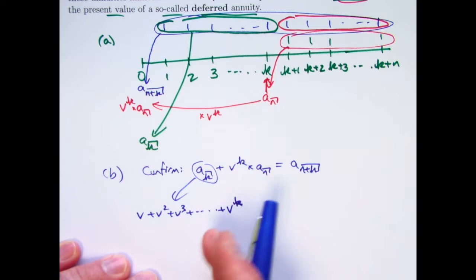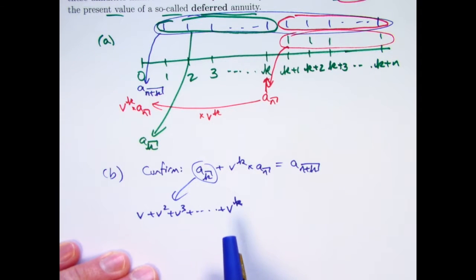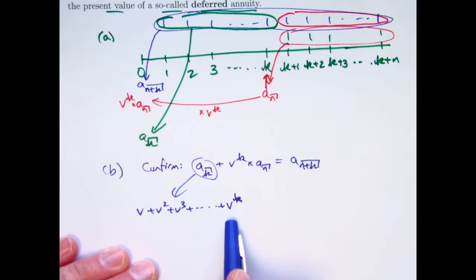So V is the present value of the first payment. I'm pulling it back one year. V squared is the present value of the second payment. I'm pulling that payment back two years, et cetera. V to the K is the present value of the Kth payment.